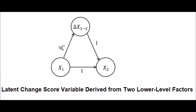In this model, you will constrain the path between X1 and X2 with unit weight, and the path between the change in X and X2 with unit weight. The parameter beta 1 — that is, the path between X1 and the change in X — will reflect the first difference at the second occasion.